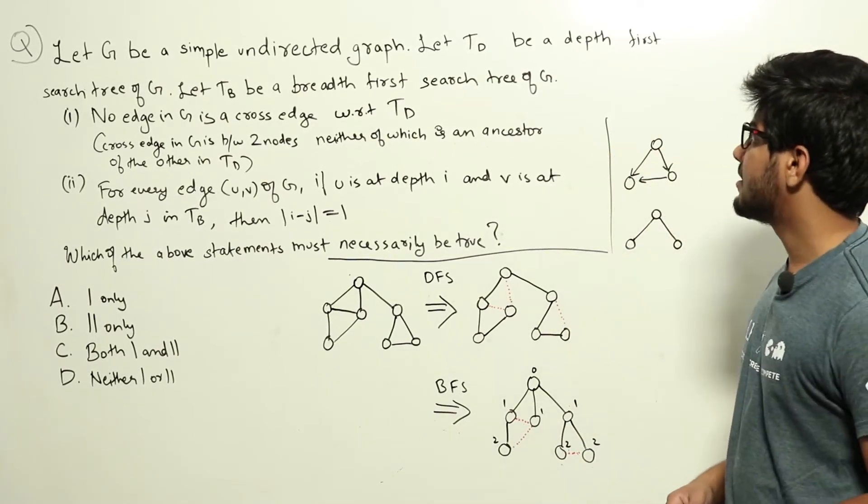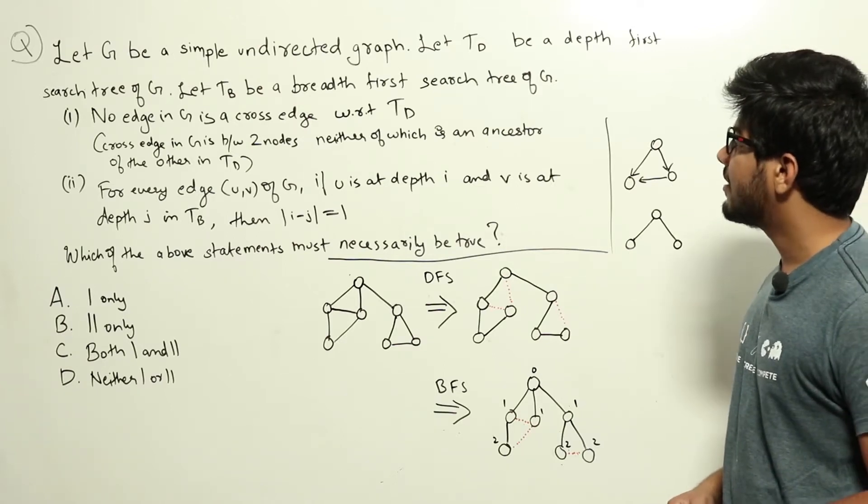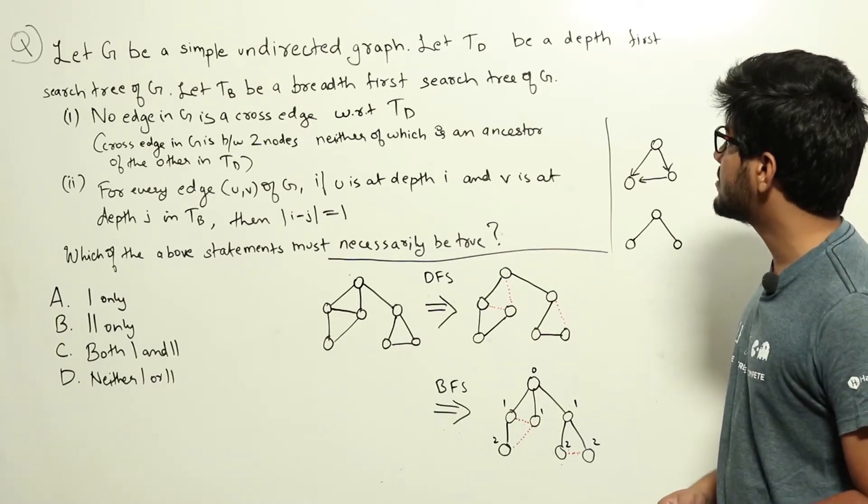Let G be a simple undirected graph. Let Td be a depth first search tree of G. Let Tb be a breadth first search tree of G.